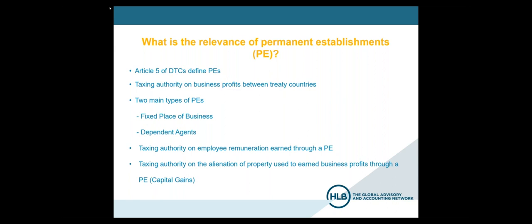There are two main types of permanent establishments. The traditional ones are the fixed place of business and dependent agents. What else is relevant when permanent establishments are found is that most treaties also allow taxing authority over employees working at that permanent establishment in the foreign jurisdiction, and taxing authority on alienation of property used to earn business profits through that permanent establishment. So you may end up with capital gains when winding up operations down the road — a lot of things can happen when you have a permanent establishment set up in a foreign jurisdiction.